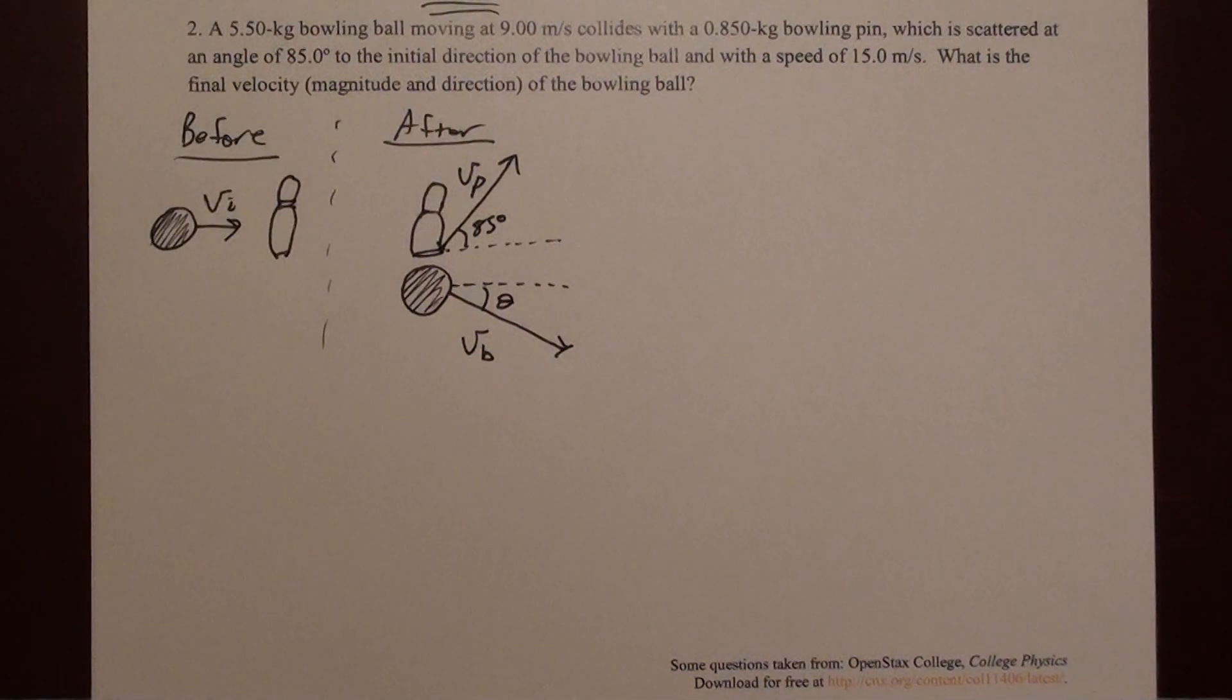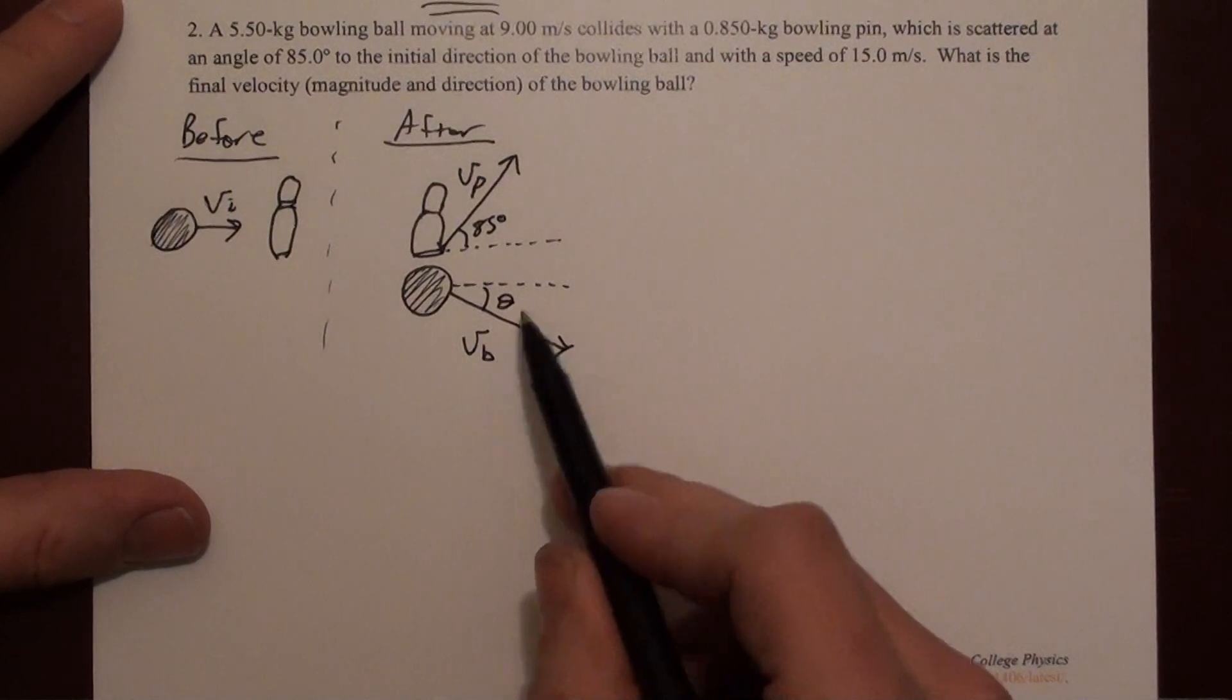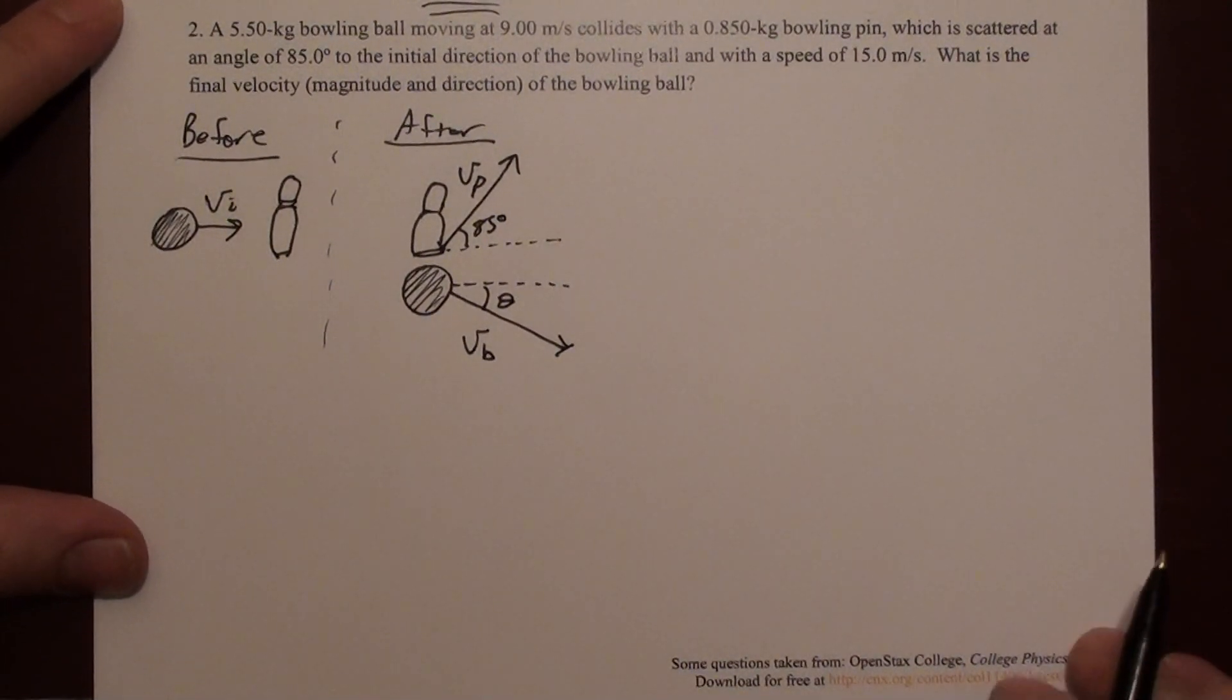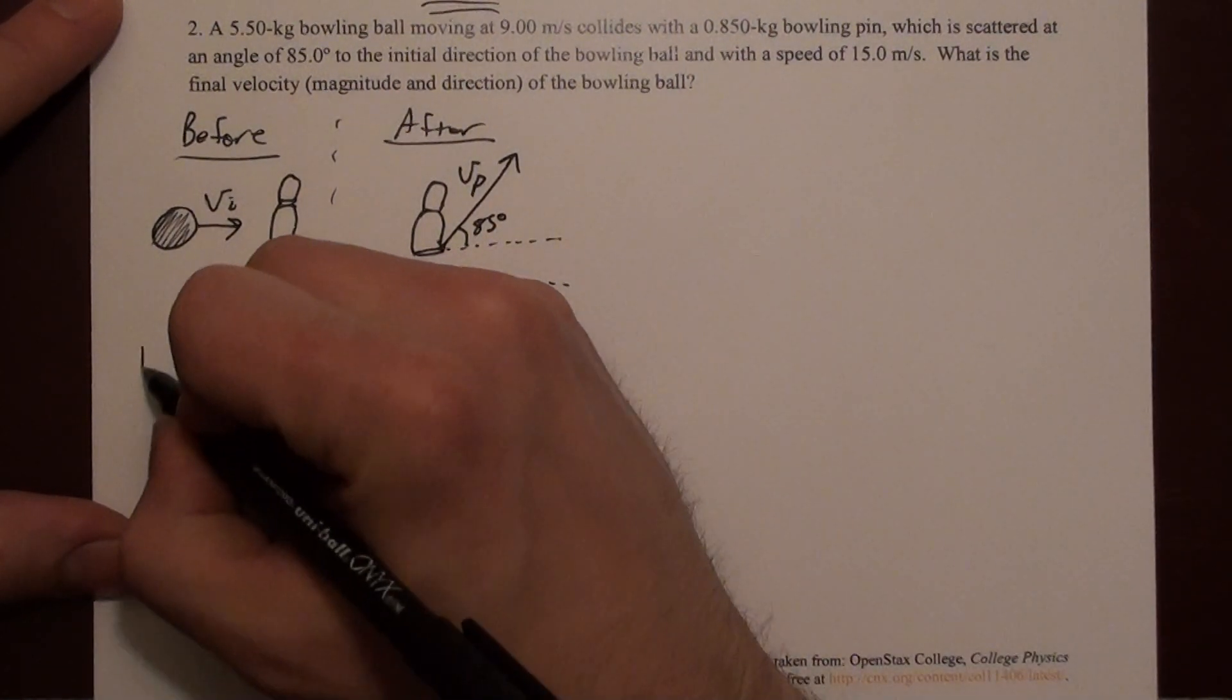If we draw the bowling ball here, it's probably traveling something like this. We can label this as vb for the ball and label that as theta. That's a reasonable diagram for what's going on. We're solving for vb, the size of this, and theta.